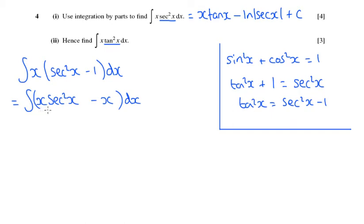Now we've just found the integral of this expression here, x sec squared x. We've got that answer from part 1. So all we have to now do is integrate x, which is dead easy. So we are going to get x tan x minus ln sec x, or you might have here plus ln cos x. So that's this part integrated, minus x squared over 2.